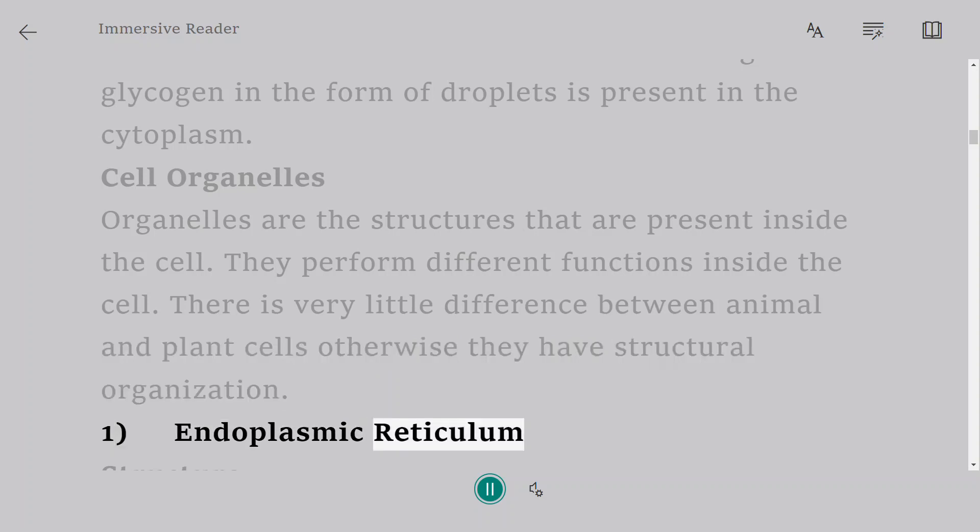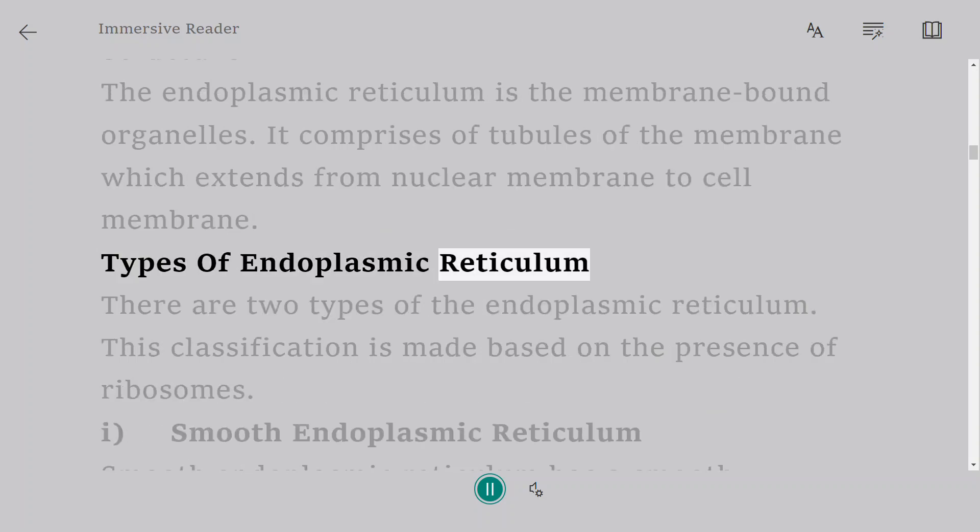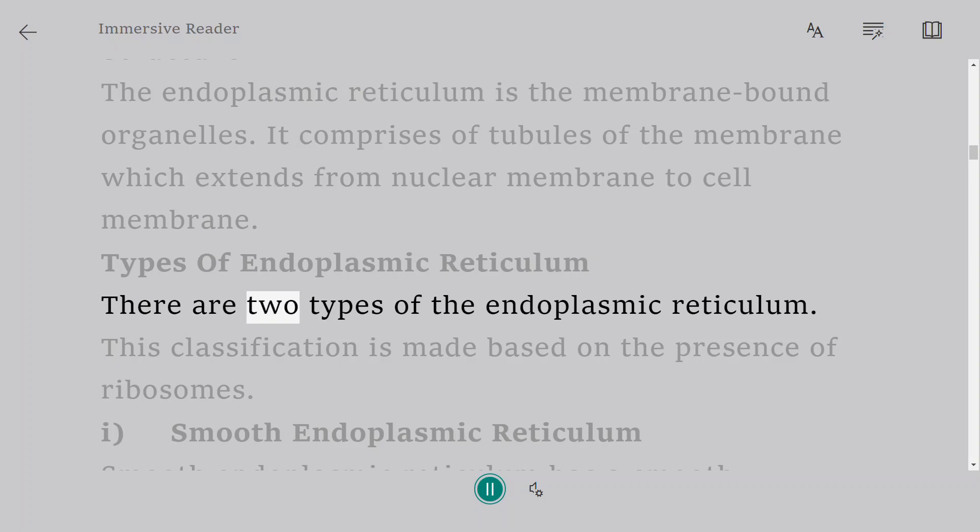1. Endoplasmic reticulum. Structure: The endoplasmic reticulum is the membrane-bound organelles. It comprises of tubules of the membrane which extends from nuclear membrane to cell membrane. Types of endoplasmic reticulum: There are two types of the endoplasmic reticulum. This classification is made based on the presence of ribosomes.